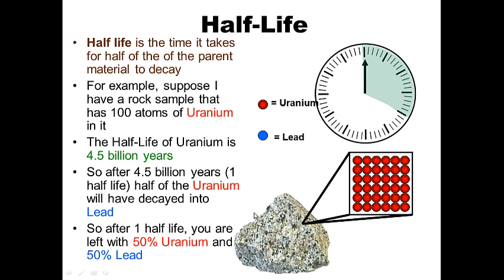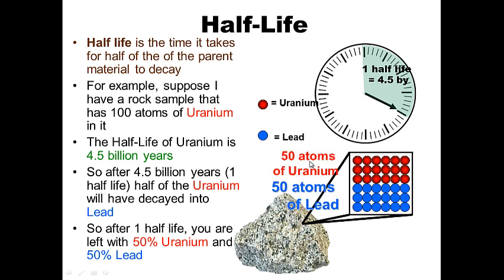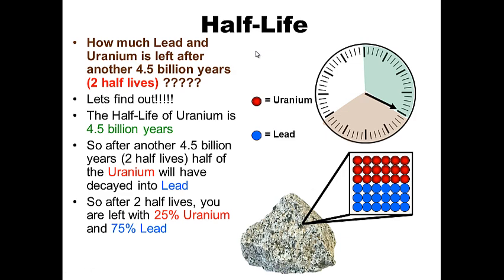Let's say this rock has about 100 atoms of uranium. After 4.5 billion years, half of them have become lead. So if I find a rock with 50 atoms of uranium and 50 atoms of lead, I know that it's 4.5 billion years old. After one half-life, if I know the half-life, I know the rock is 4.5 billion years old. What about after two half-lives — how much lead and uranium is left after another 4.5 billion years?